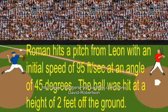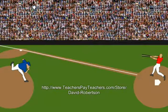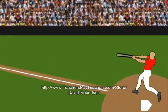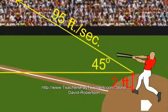Roman hits a pitch from Leon with an initial speed of 95 feet per second at an angle of 45 degrees. The ball was hit at a height of two feet off the ground. And this is a better look at the motion velocity, the height, and the angle of the bat.